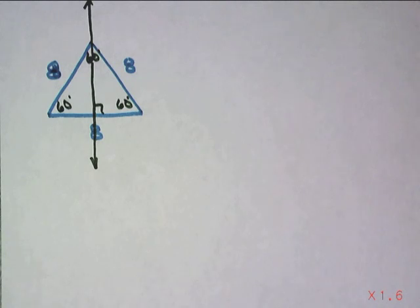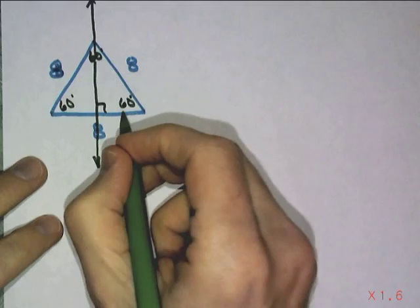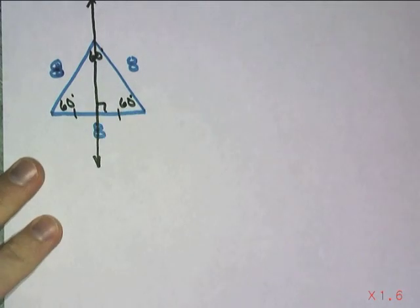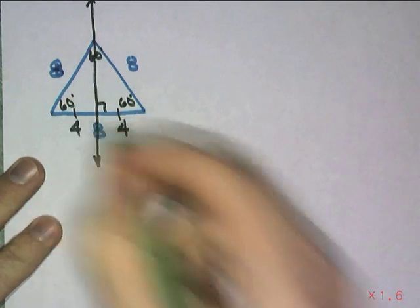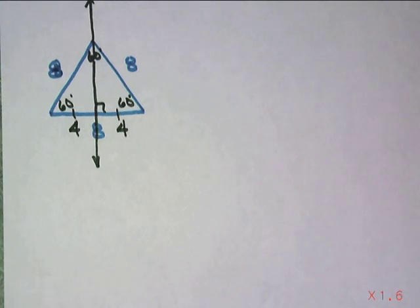So it's the altitude, it's the median. It's the median. Well, that means it cuts that one in half. So these both are 4. Now I do have a special right triangle.